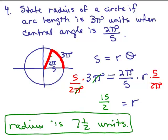That should make sense to you when you look at this picture here, so what they're saying is if this radius is 7 and a half units, does this arc length look about 3π? Remember, π is about 3, so if this is 7 and a half, is this around 9? Well, you know, it's within the ballpark.